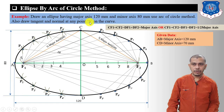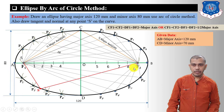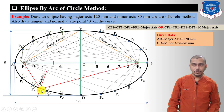To draw a normal and tangent to the ellipse at point S, first mark a point S anywhere on the curve. Connect S to F1 and S to F2. Draw the bisector of angle F1-S-F2 — this bisector is the normal to the curve. The line perpendicular to the normal and passing through point S will be the tangent to the curve.